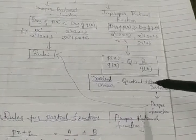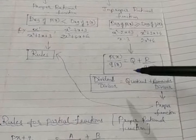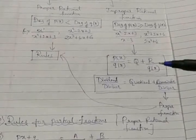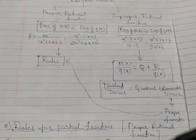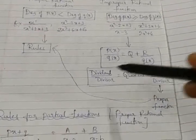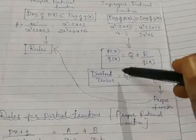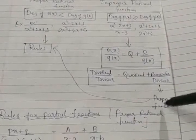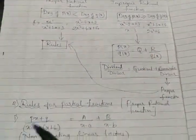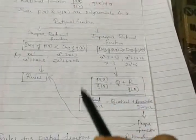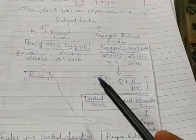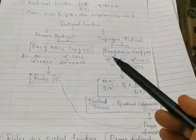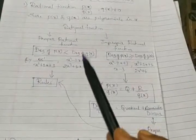Once we divide the improper function, we get quotient plus remainder upon divisor. The quotient part can be easily integrated, but for the remainder upon divisor part - this is once again a proper fraction. For such a proper fraction only you can apply the rules. Even if this concept is not fully clear yet, don't worry - numerical sums will make you understand what exactly we are dealing with here.